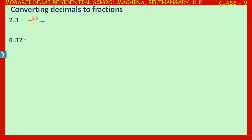Now, 0.32. First, remove the decimal point and write in the numerator. If I remove the decimal point of 0.32, that becomes 32.